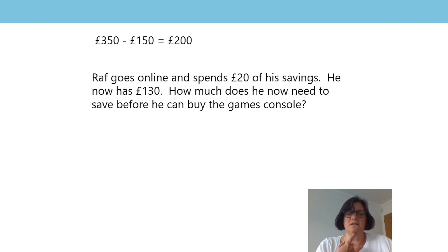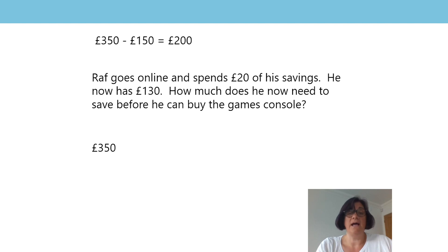Have his savings increased or have they decreased? That's right — if he spent some of his savings, the amount he has will have decreased, so now he needs to save more. Can we write an equation to help us find out how much he needs to save? The games console hasn't changed its price. What has changed is the amount of money that he's got. So the minuend has stayed the same, but the subtrahend representing his savings has decreased. What have we already learned that we could use? If the minuend stays the same but the subtrahend changes, we need to change the difference by the same amount.